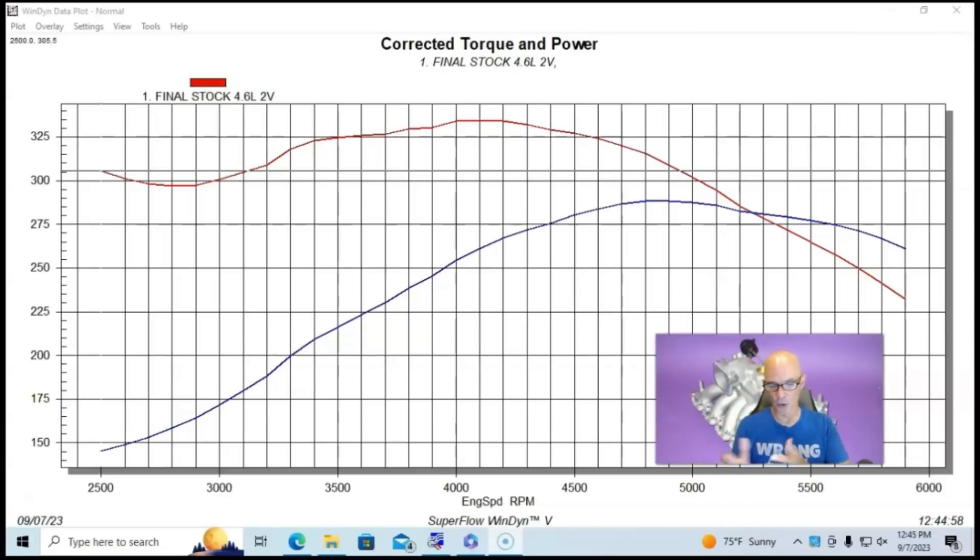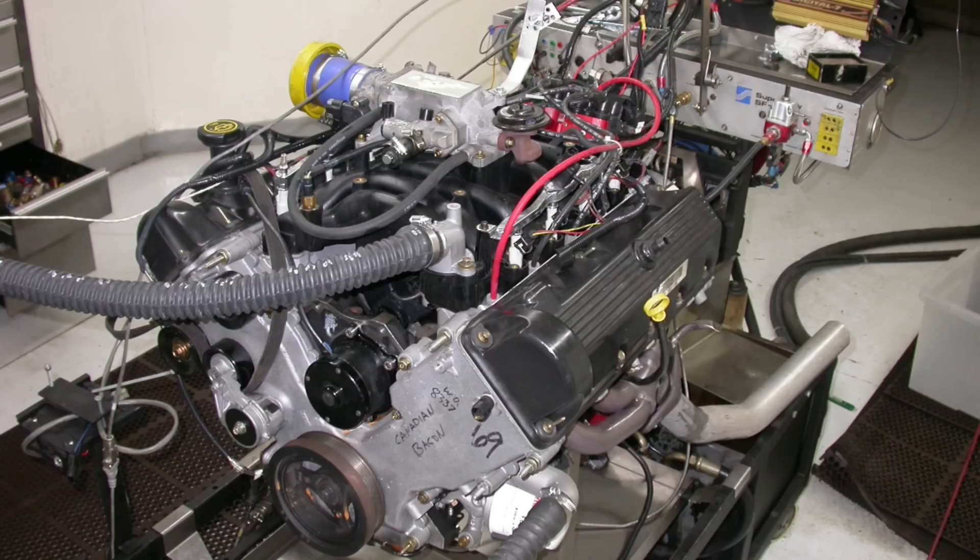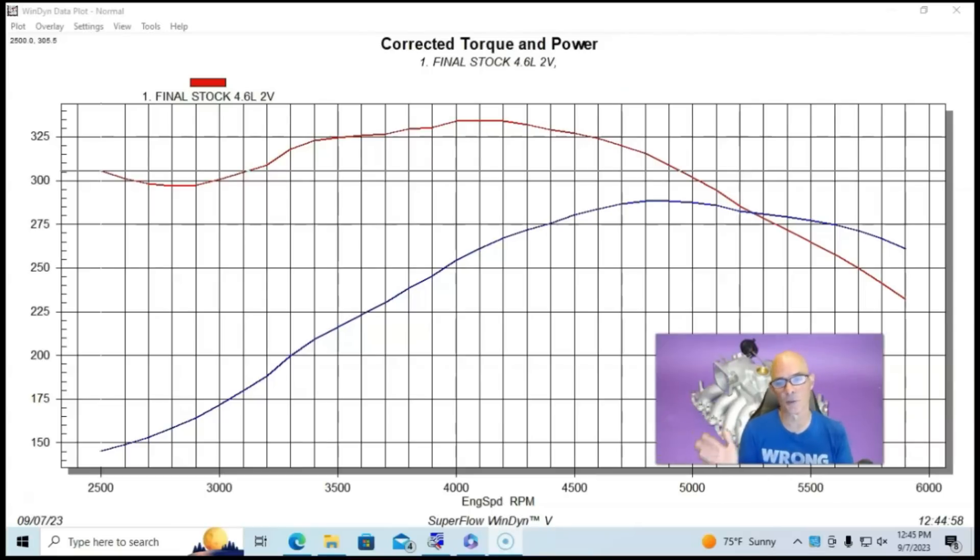So this particular motor was a 4.6 liter PI motor, and it was built by the guys at Sean Hyland. It actually had forged pistons and forged rods in it. But otherwise was stock. It had a stock crank in it, a stock short block. And I take that back, it might even have a Cobra crank in it. But they did that so that we could run it as a test mule and run lots of power with it.